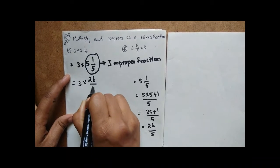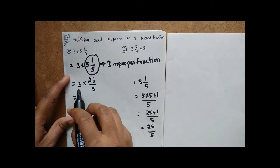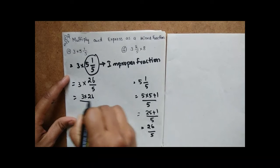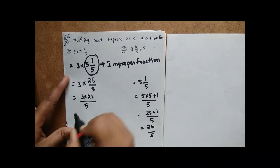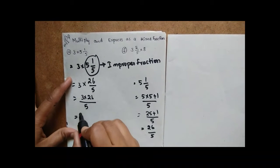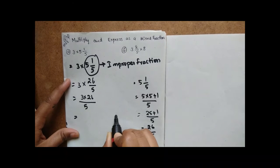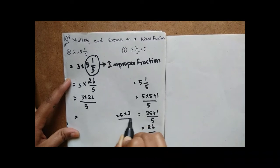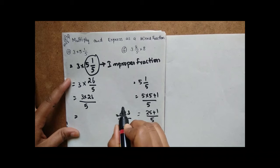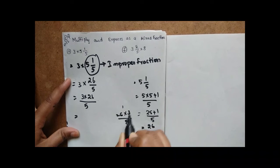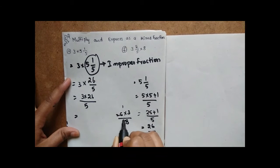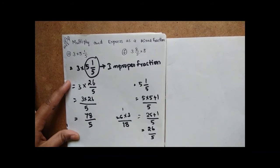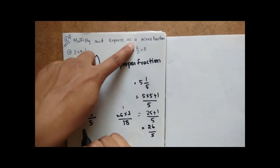So now we have 3 into 26 by 5. We multiply: 26 into 3 — 3 sixes are 18, 3 twos are 6, giving us 78 by 5.